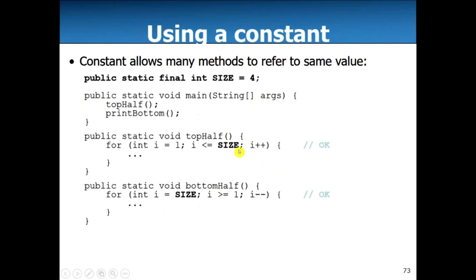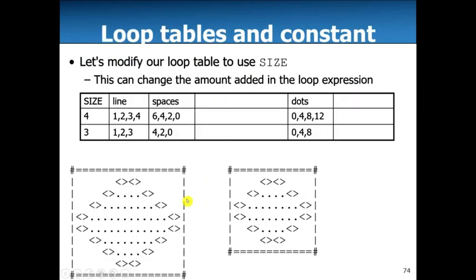So here, this is not the complete code, obviously, but they're just showing let's add a public static final int for the size. And now, instead of using four, let's just put size in. And obviously, our code's not done. And now, let's go back to this table here. So again, we have to figure out for size four and for size three, how many spaces are in here. So there's six, four, two, and zero. And for size three, it's four, two, and zero.